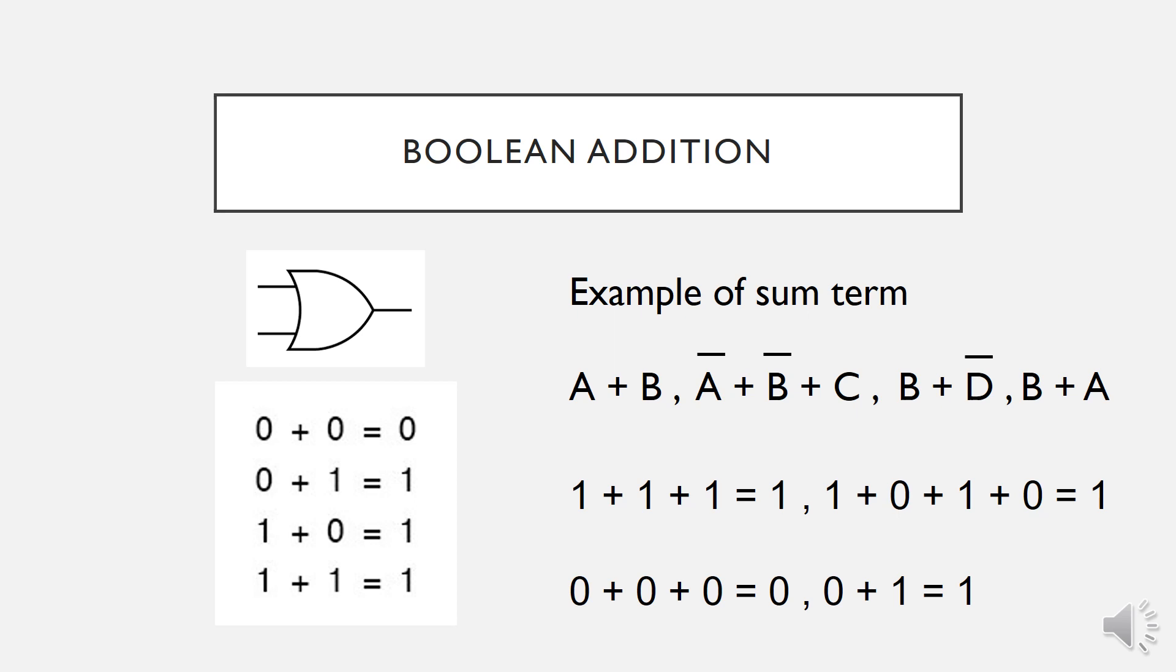In Boolean algebra, addition is equivalent to OR operation, and its basic rules are according to OR gate operation. These are the list of Boolean addition. And if you see here, Boolean algebra is completely similar to what we learn in truth table for OR operation.